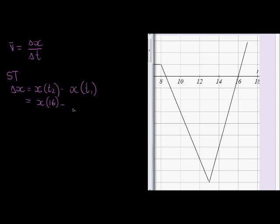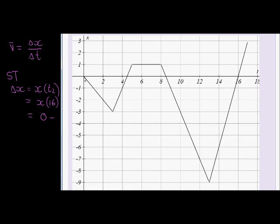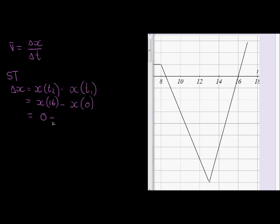Minus x at time 0. Now x at time 16 is equal to 0, we just saw that. So that's equal to 0 minus what is x at time 0? It's also 0. So 0 minus 0 means my displacement is 0.